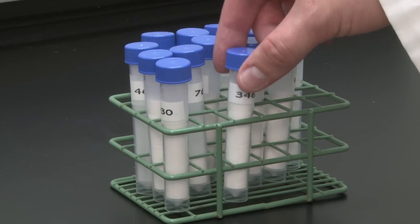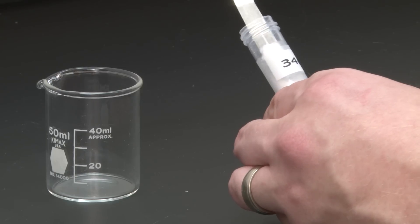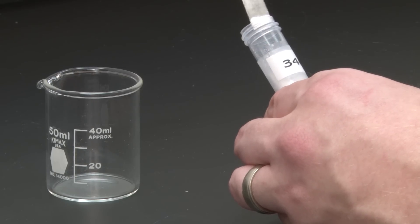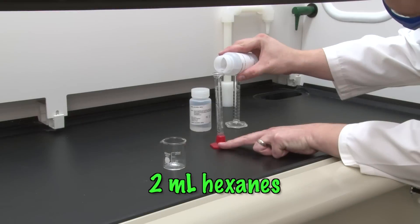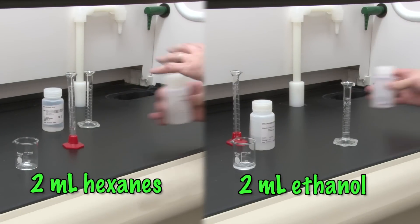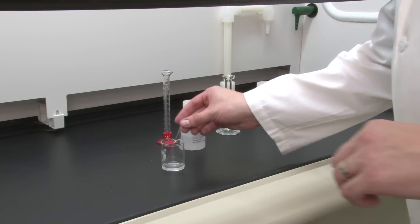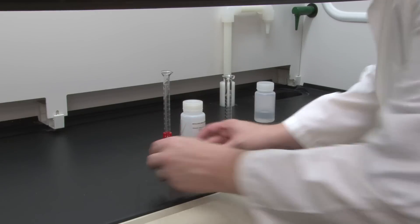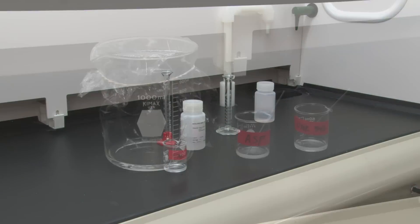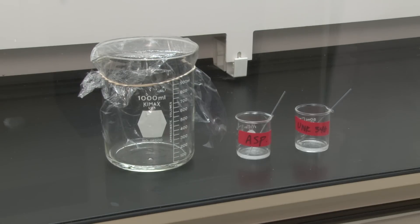Now, get an unknown sample from your instructor. Be sure to write down the unknown's number. Prepare it in the same way you prepared the known sample. Place a small amount in a separate 50-milliliter beaker and add ethanol and hexane under the hood. Stir, label the beaker, and add a capillary tube. Return the remainder of the powdered unknown to your instructor. At this point, you should have your developing chamber, a dissolved known sample, and a dissolved unknown sample.